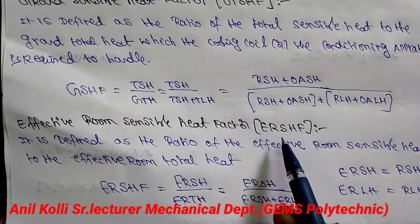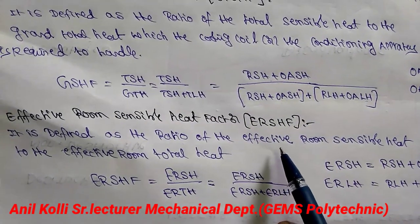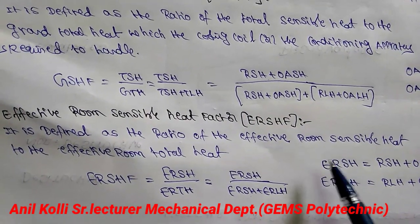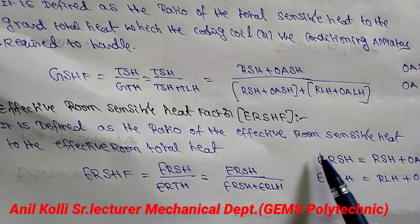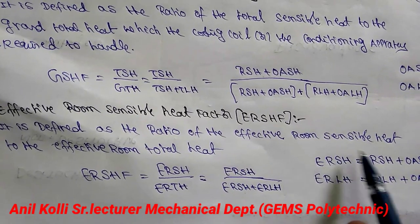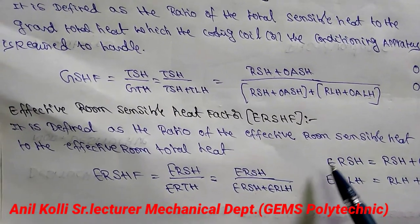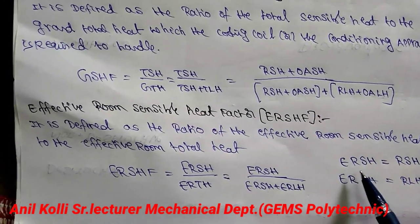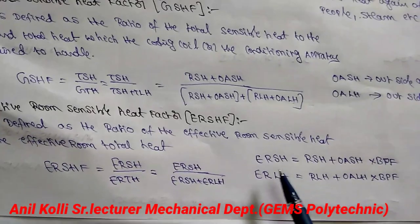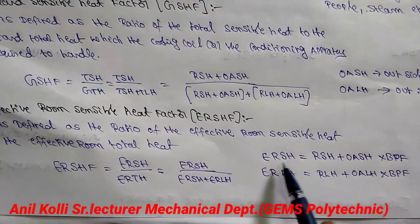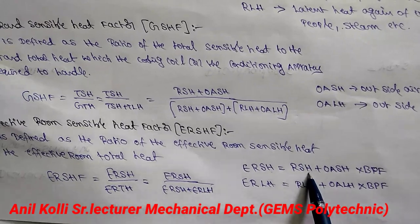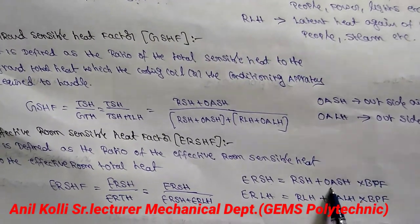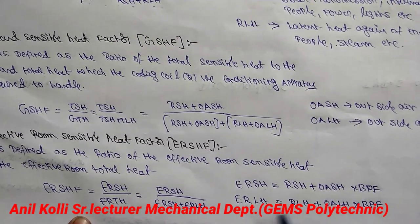Next is effective room sensible heat factor. It is defined as the ratio of effective room sensible heat to the effective room total heat. Effective room total heat equals effective room sensible heat plus effective room latent heat. ERSH is calculated as: RSH (room sensible heat) plus OSH (outside air sensible heat) multiplied by the bypass factor.